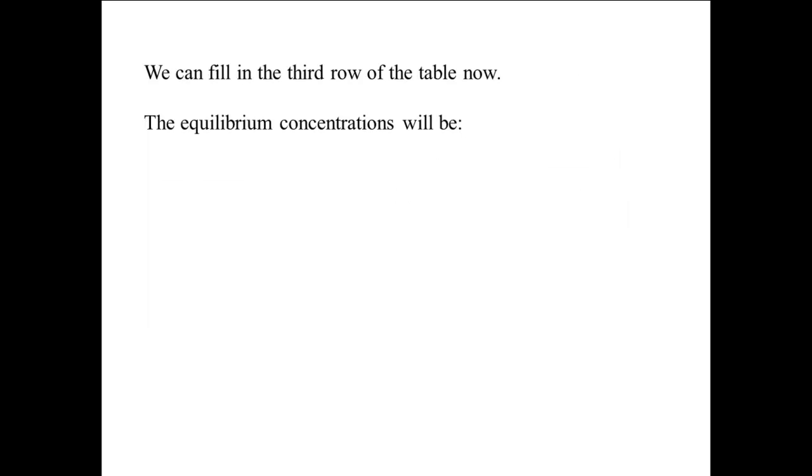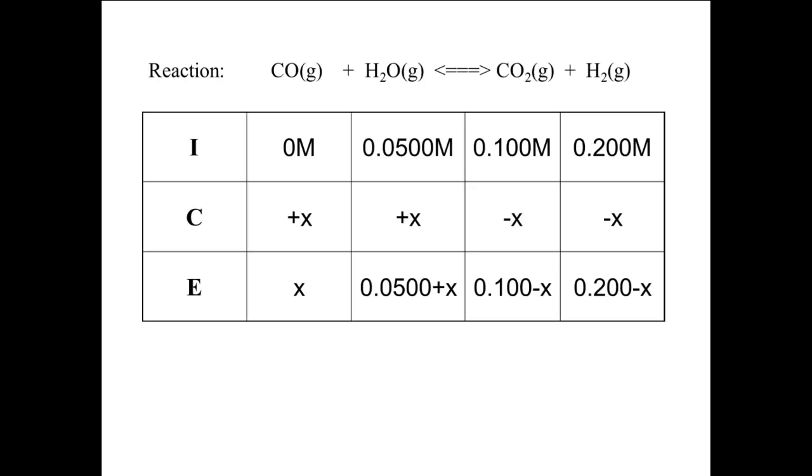Now we can fill in the third row of the table. The equilibrium concentrations will be for CO, X; for H2O, 0.0500 plus X; for CO2, 0.100 minus X; and for H2, 0.200 minus X. So the third row of the table becomes X for CO, 0.0500 plus X for H2O, 0.100 minus X for CO2, and 0.200 minus X for H2.